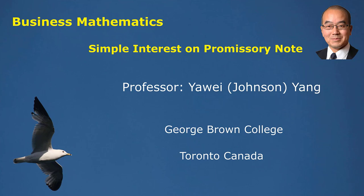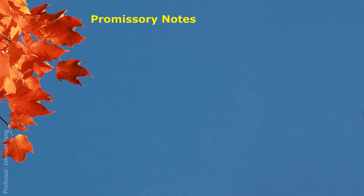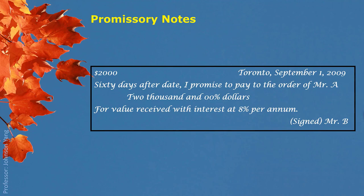Here we talk about one application of simple interest called a promissory note. A promissory note happens between two parties — these could be a company, government, or just two individuals. One party is called the debtor, who borrows money from another party and signs this piece of paper called a promissory note. The paper shows when the money will be returned and what terms will be carried.